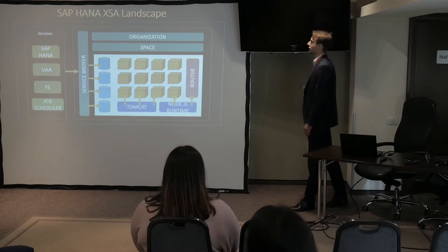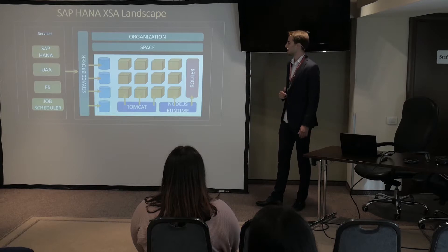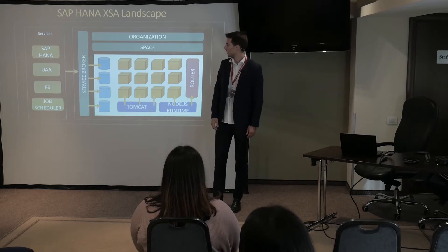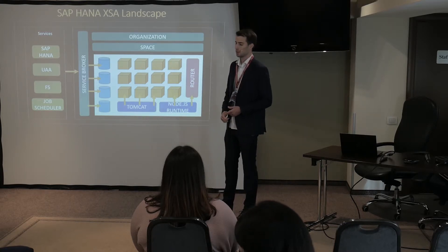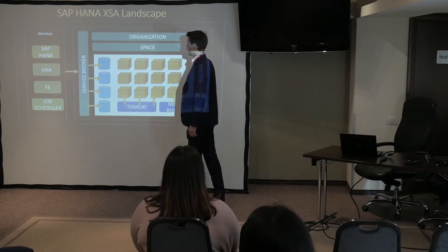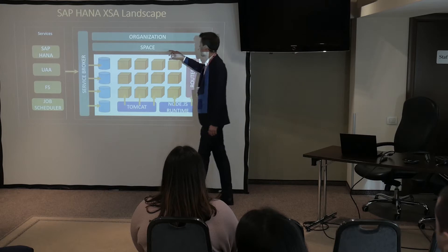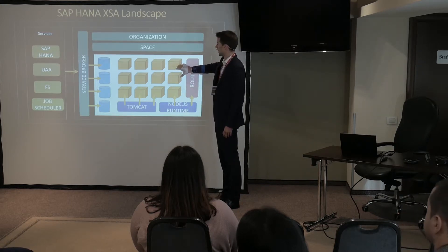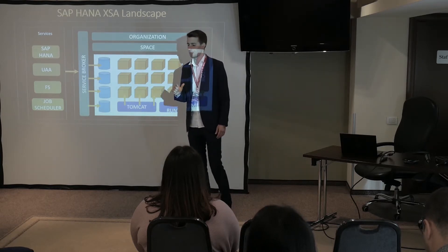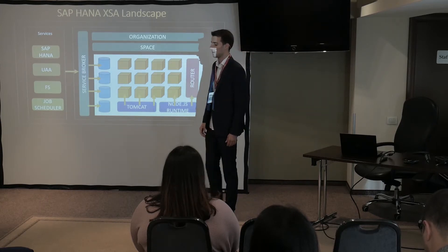How does the SAP HANA XSA landscape look like? To repeat: it's an application server built on top of SAP HANA. It has integration with services — SAP HANA user authentication and authorization, which is a security service, file system, and job scheduler. With this service broker, you can easily just select the services you need and add them in one container — an isolated box that contains everything you need for your solution. The whole IOTA fits into one container and then you can ship it wherever you want.